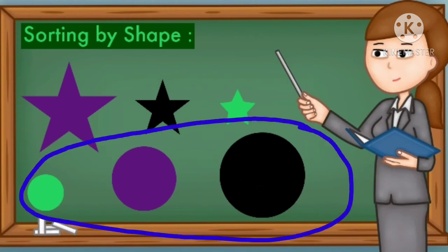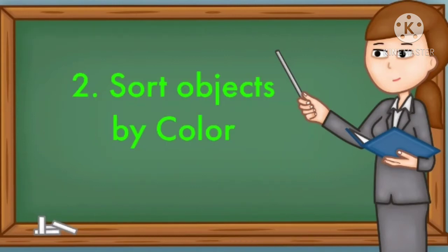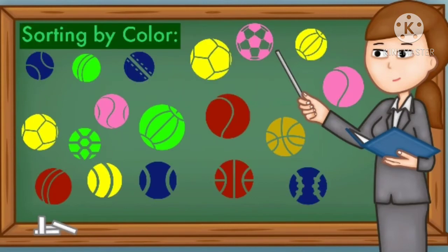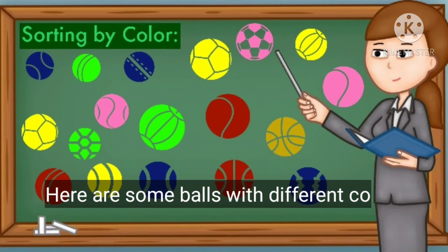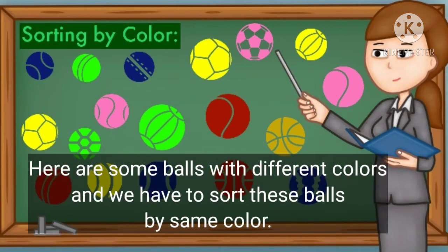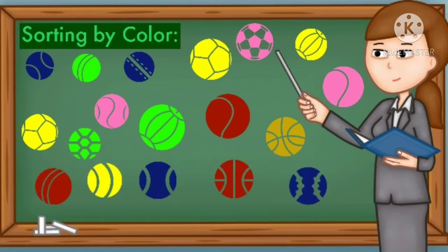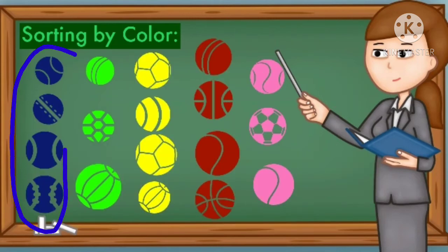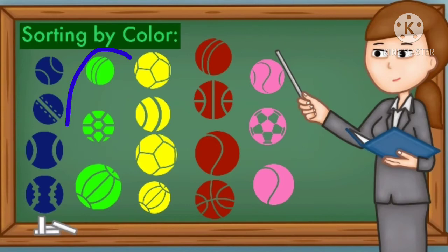Number two: sort objects by color. Here are some balls with different colors, and we have to sort these balls by the same color. These balls are blue — so we have sorted all blue balls. These balls are green — so we have sorted all green balls.